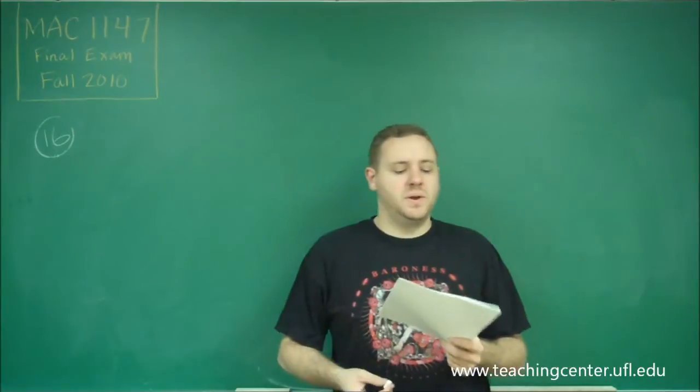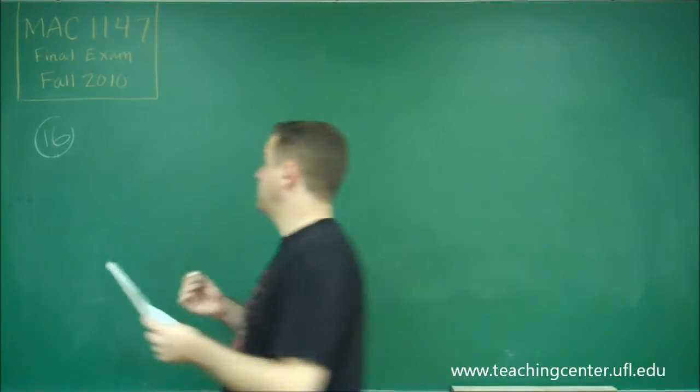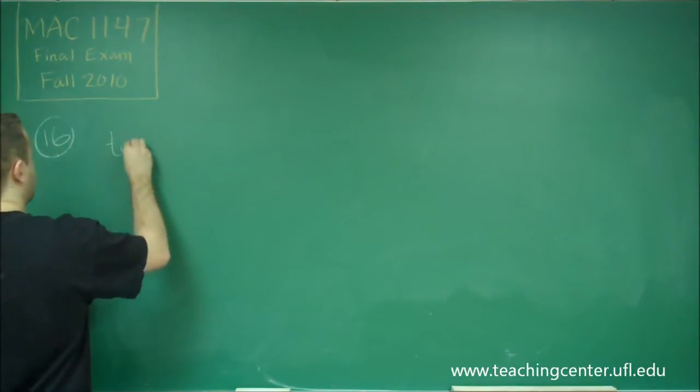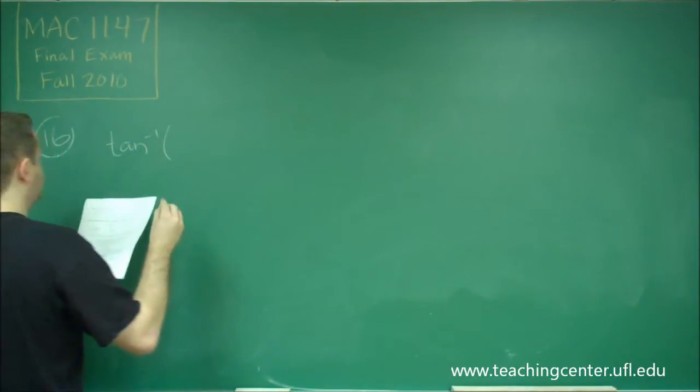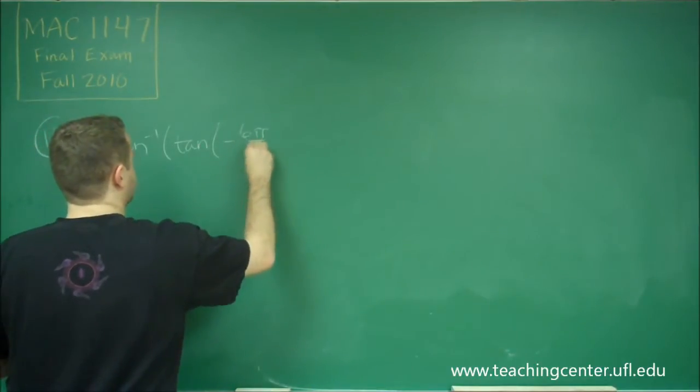Okay, for number 16, we need to evaluate an arc trig function of a regular trig function. So we have arctangent of tangent of negative 6 pi over 7.